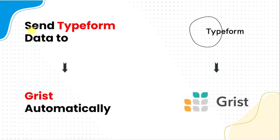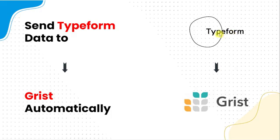Hello everyone. Welcome back to our channel Pebbly. In this video we are going to learn how to send Typeform data to Grist automatically. The idea here is that you have created an inquiry form in your Typeform account and you are collecting the form responses from various customers. Now you want that whenever a customer fills your Typeform inquiry form, automatically all the details should be added as a record into your Grist account. But the question is how to do this?